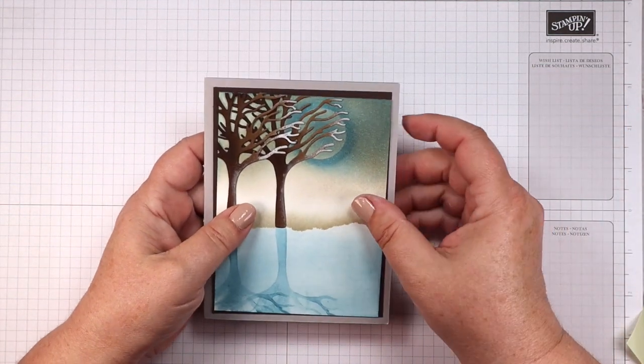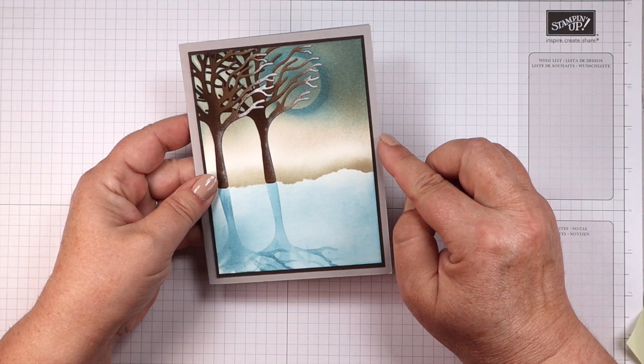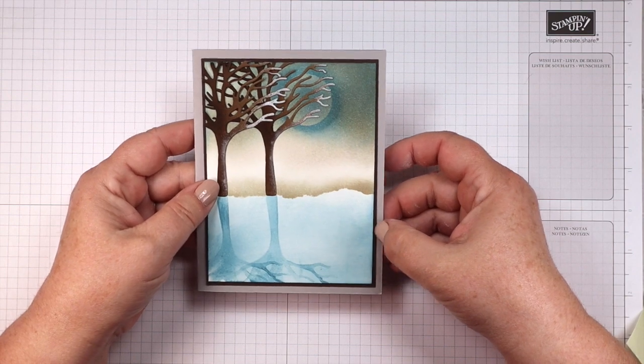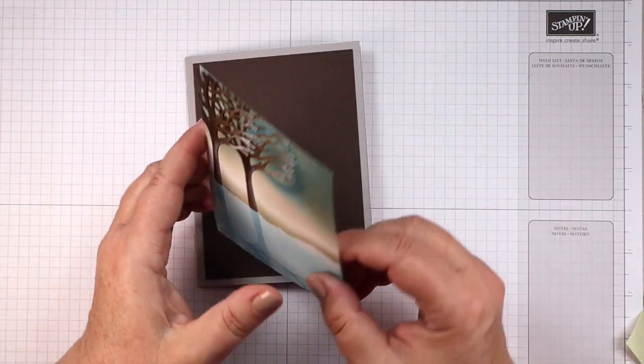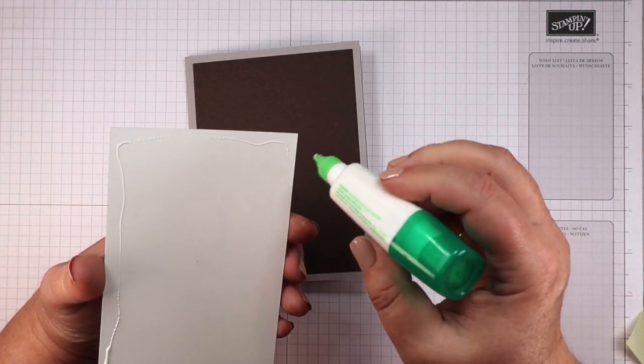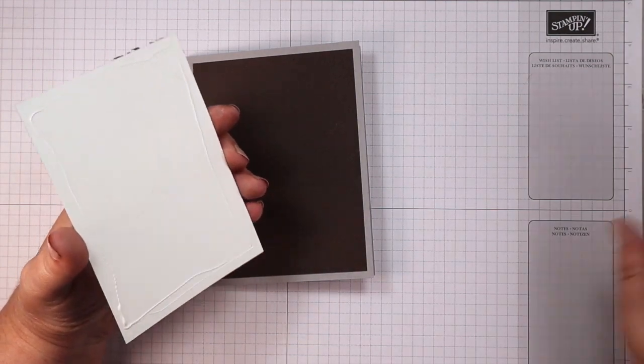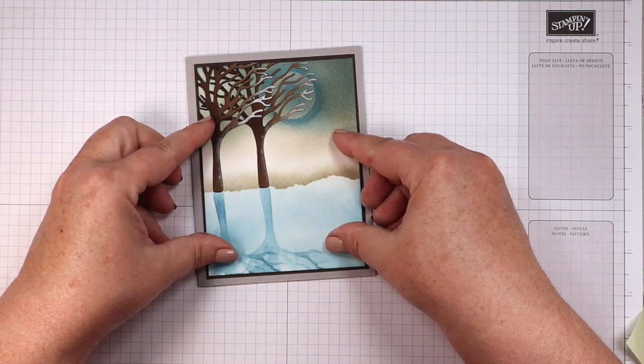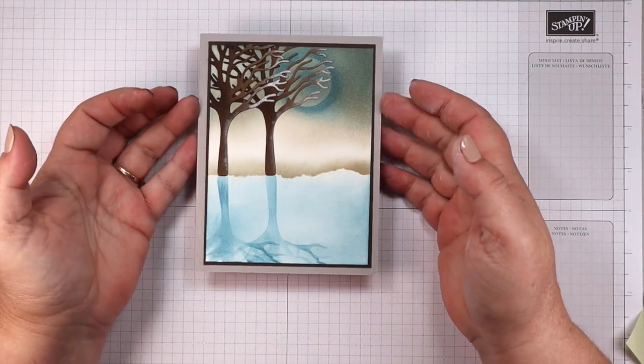So we're going to layer this on top of an early espresso panel, and then we have a smoky slate card base. I call this a weenie layer, this little early espresso panel, because it's just one eighth inch larger than our main image panel. That early espresso panel is three and seven eighths by five and an eighth. Our smoky slate card base is five and a half by eight and a half, folded in half for an A2 size.